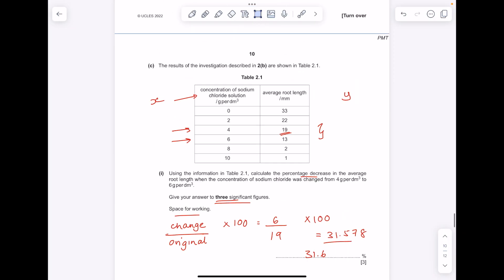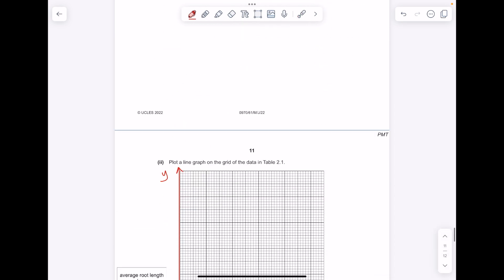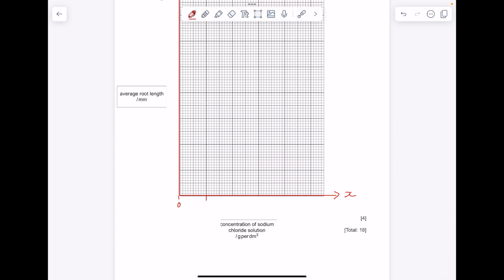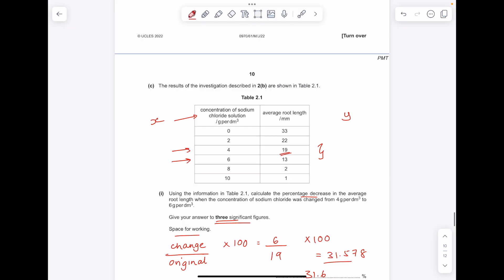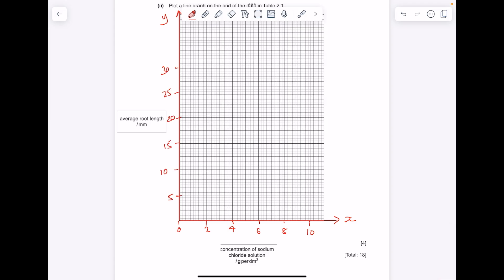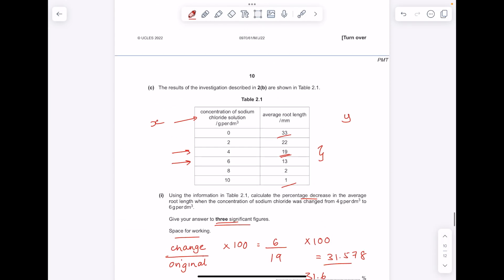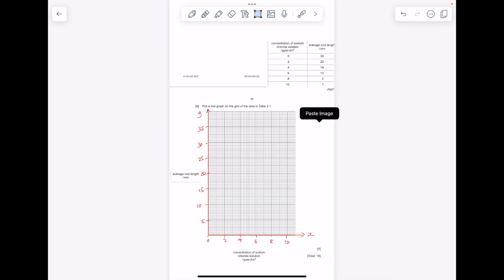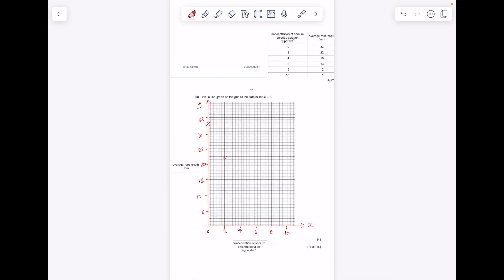Perfect. We need to go from 0 to 10. So 0, 2, 4, 6, 8, 10. Average root length needs to go from 1 to 33. I have to rub these out, otherwise it won't let me steal the numbers. Now I can get plotting. Now let's join the points with a straight line. And that's me done.